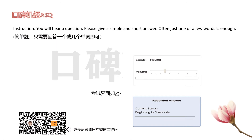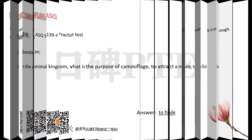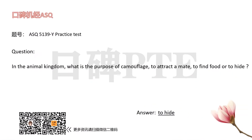In the animal kingdom, what is the purpose of camouflage? To attract a mate? To find food? Or to hide?